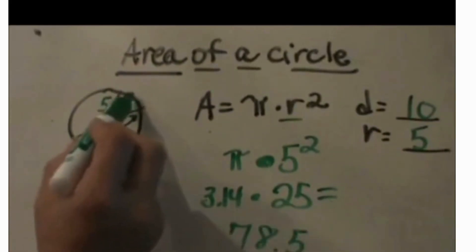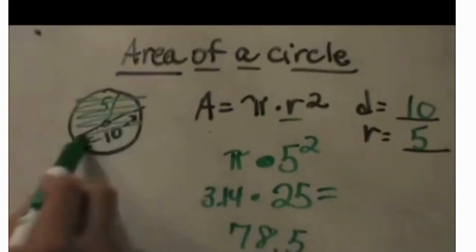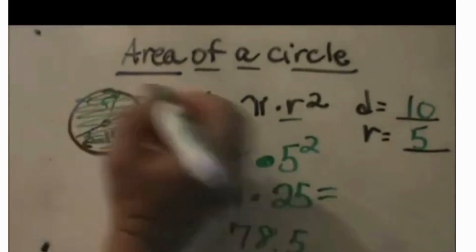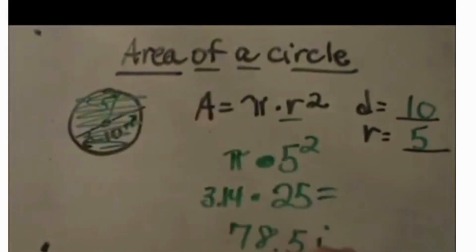Now area is two dimensional so it is the space inside of the circle. So let's just say our units were inches. Then we would say that is 78 inches squared because it is a two dimensional measure.